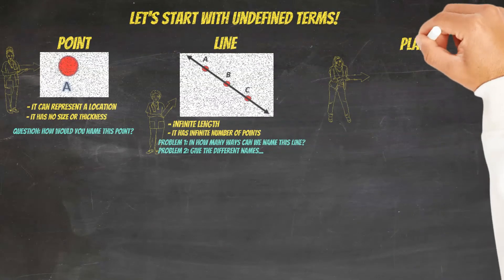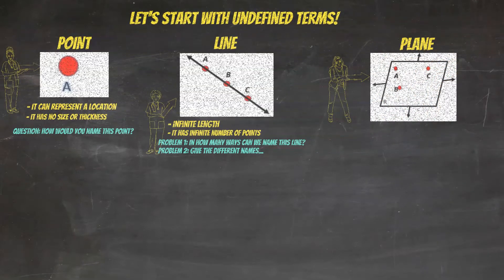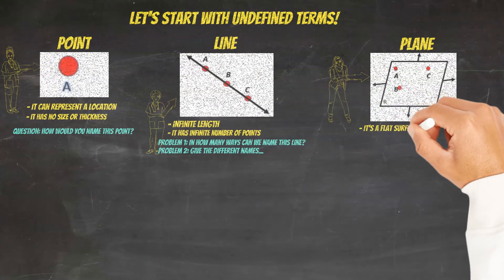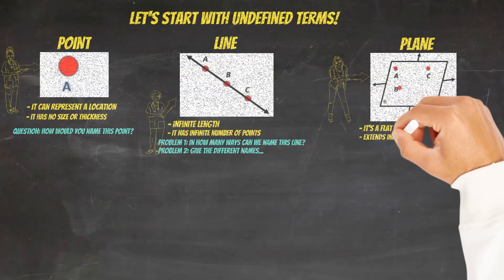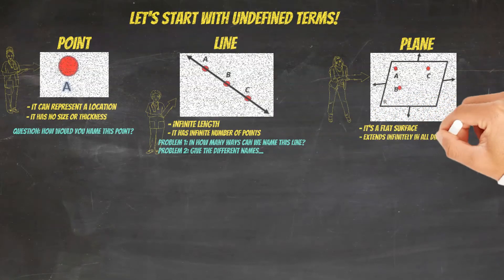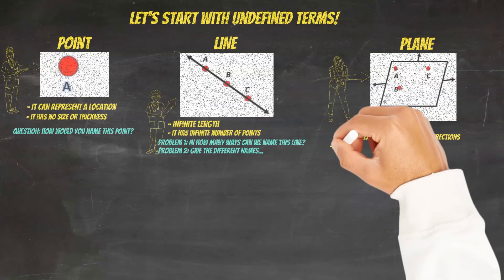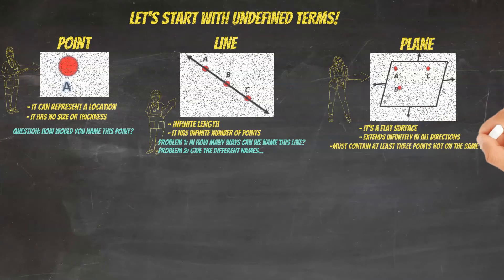And that term is a plane. Let me give you a diagram here. So we have a visual. A plane is a flat surface. This flat surface extends infinitely in all directions. Again, it goes on nonstop. And a plane also must contain at least three points.